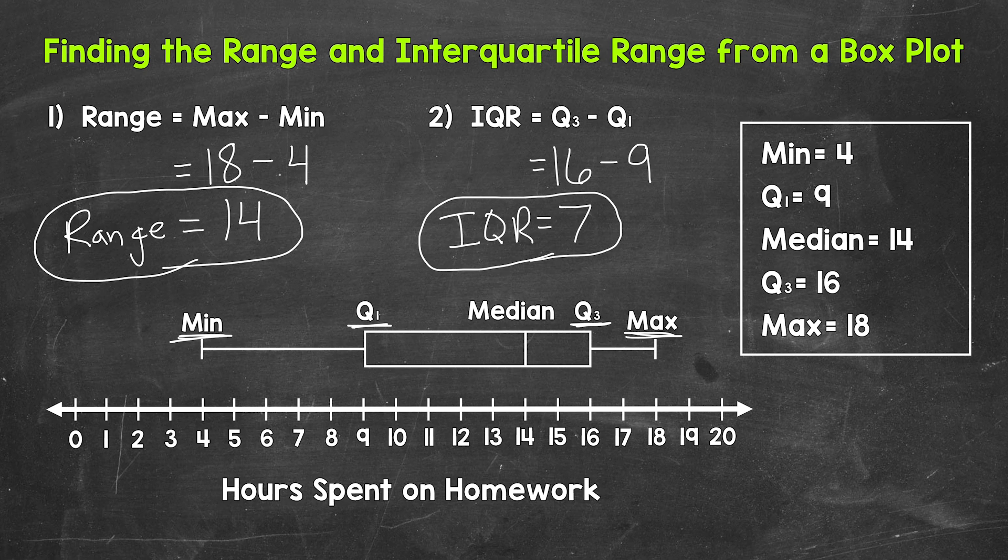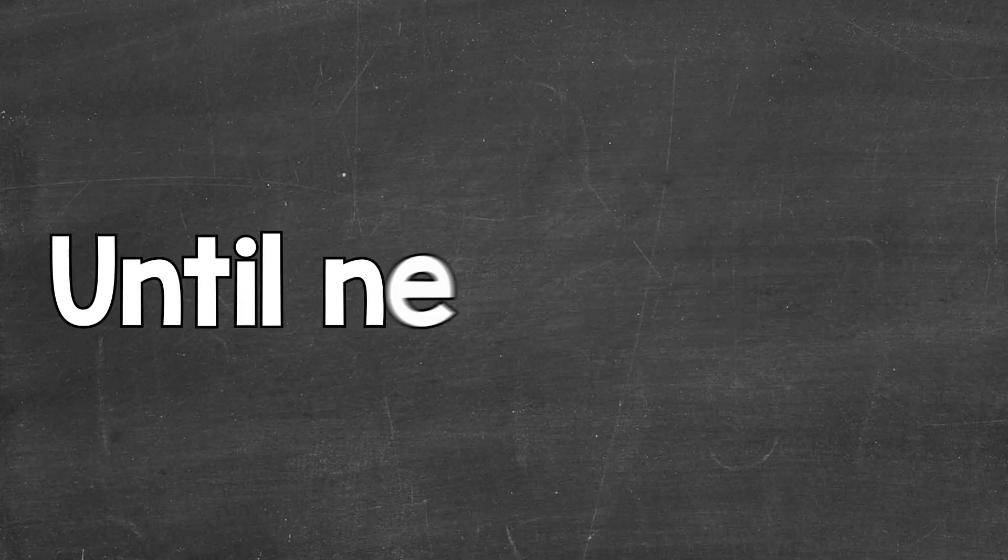The span, the spread of the middle 50% of the data is 7. So there you have it. There's how to find the range and interquartile range from a box plot. I hope that helped. Thanks so much for watching. Until next time, peace.